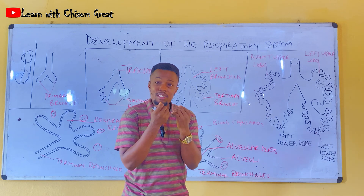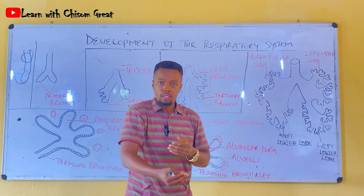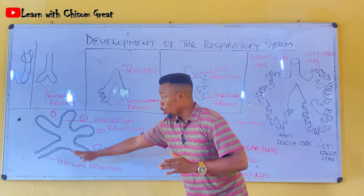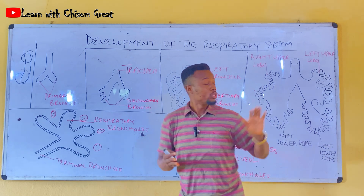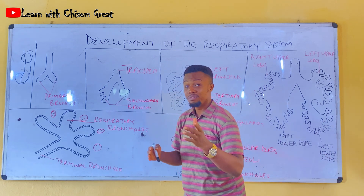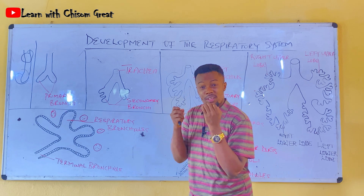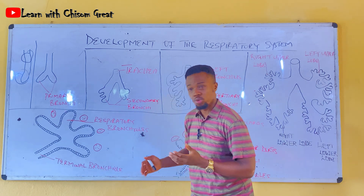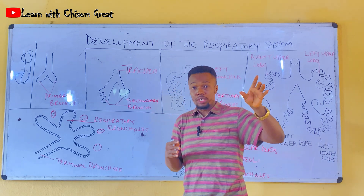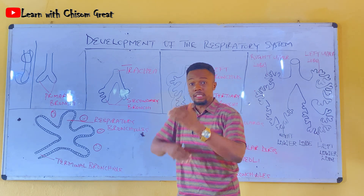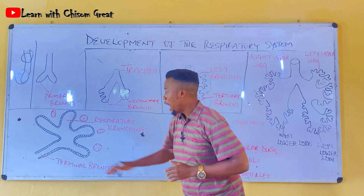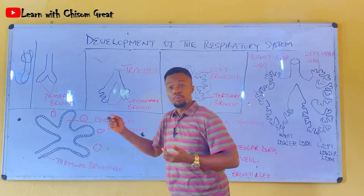The tertiary bronchi further divide to form the terminal bronchioles — two or more terminal bronchioles that the naked eye may not even be able to see. They are very tiny, and because they are so small, they are not covered by any cartilage, which is why they are called bronchioles. These terminal bronchioles are formed in the pseudoglandular stage, which occurs from week 5 to week 16. The cells lining them are cuboidal in shape.